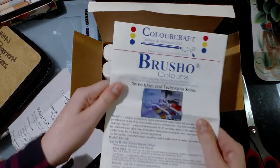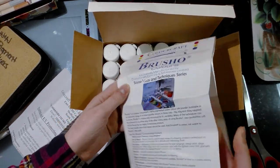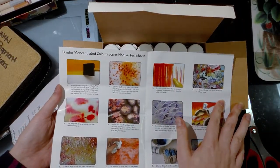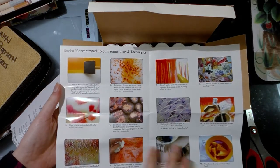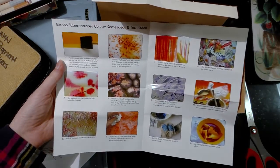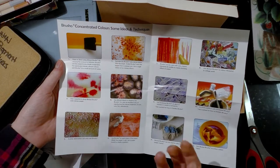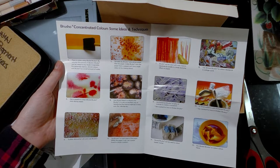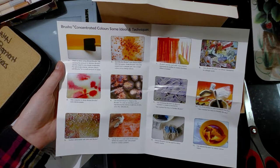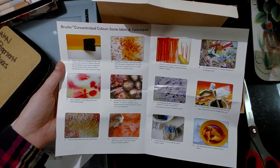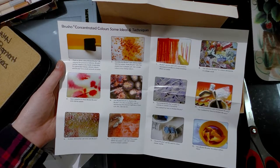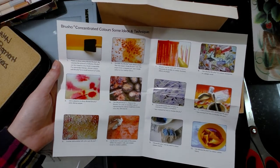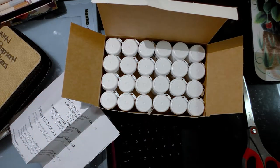It comes with a handy instruction sheet that demonstrates some of the things you can do with it. What I'm most interested in Brusho for is when you sprinkle it onto a wet surface or damp surface, or you spray water on top of it. Since it has different tints of the same color inside, you're going to get a lot of variegated color, which I thought would be really interesting.